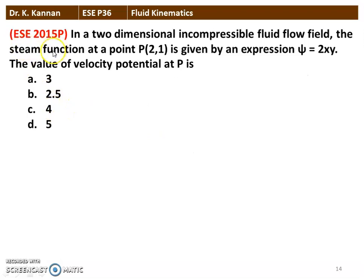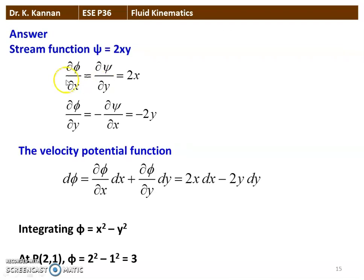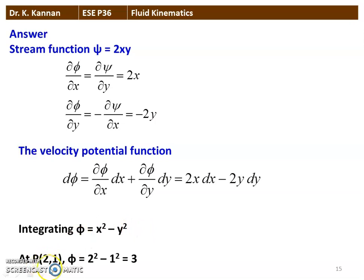The next question from the 2015 question paper: in a two-dimensional incompressible flow field, the stream function at point P(2, 1) is given by ψ = 2xy. Find the velocity potential φ at P. From the stream function: ∂φ/∂x = ∂ψ/∂y = 2x and ∂φ/∂y = -∂ψ/∂x = -2y. Integrating: dφ = 2x dx - 2y dy, giving φ = x² - y². Substituting x = 2, y = 1: φ = 4 - 1 = 3. The answer is 3.